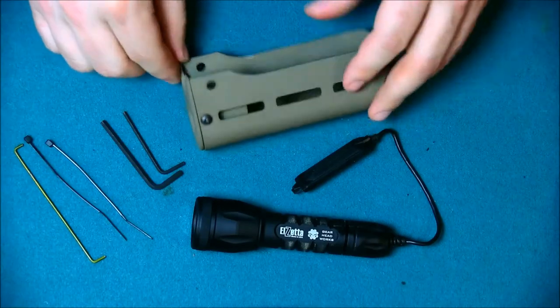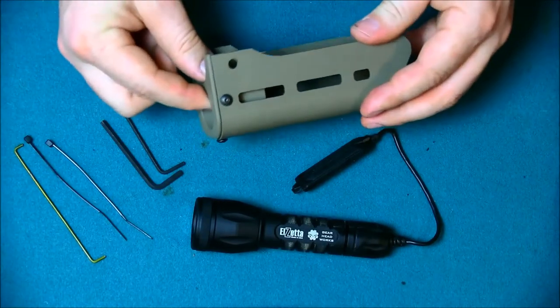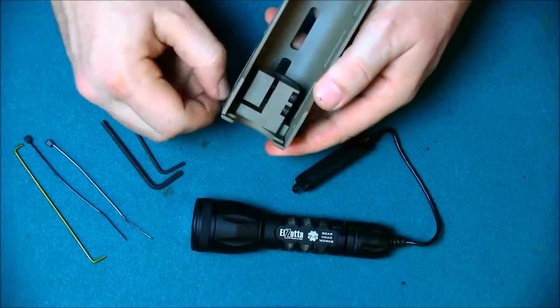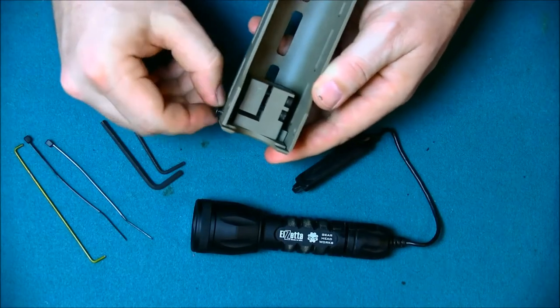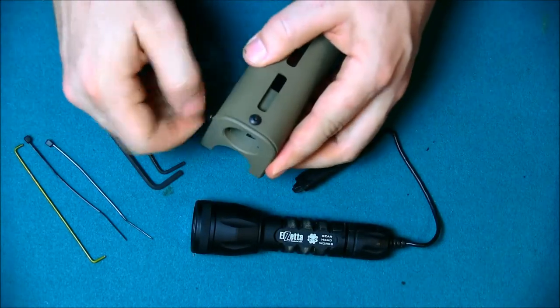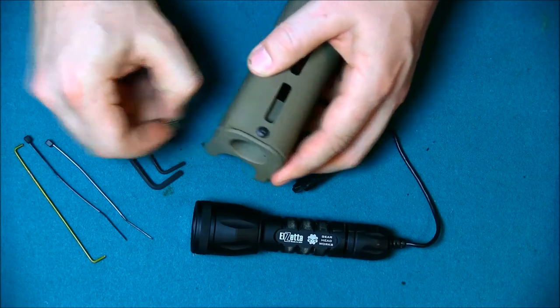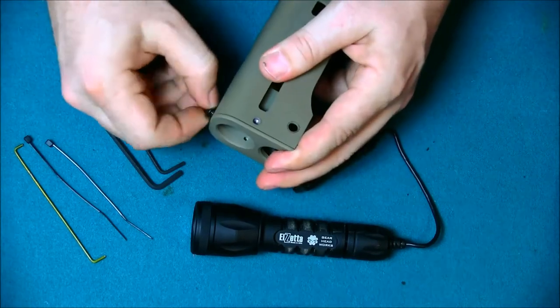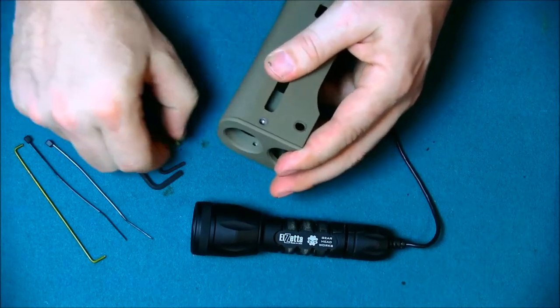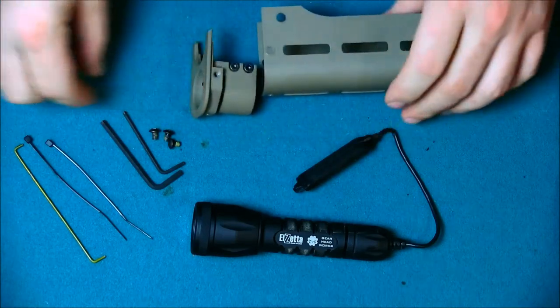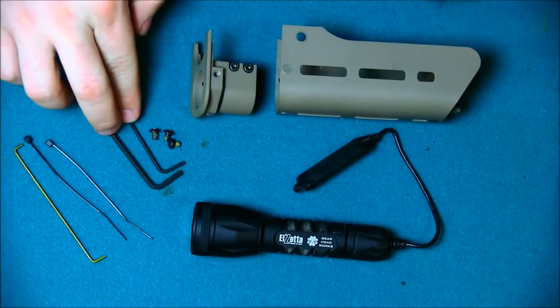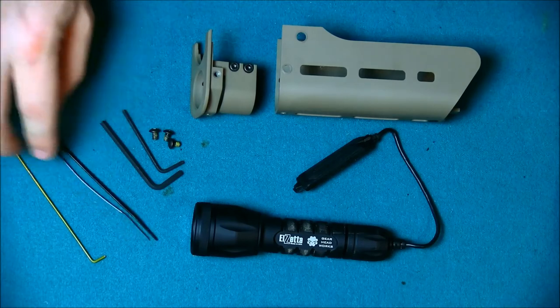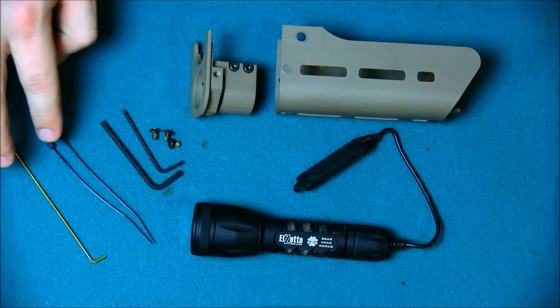So when you get your TMF, the end cap will be on loose. I do that so that the screws, the lock tight on the screws don't get set. I let the customer set them for the first time. So you'll want to take it apart. Now all the tools you need to do it come with the TMF. You got your two size allen wrenches and if you get an Elzetta light, it comes with the zip ties.